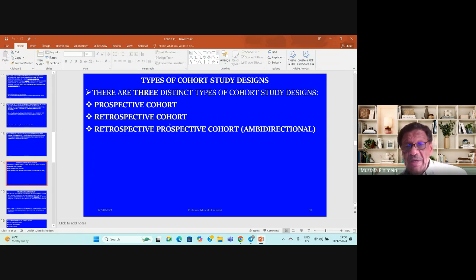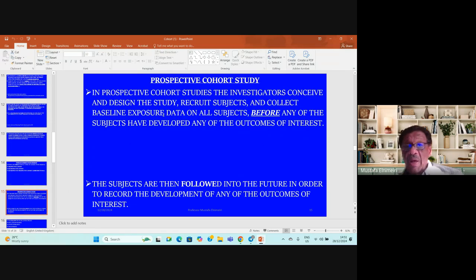We have three categories of cohort study designs: prospective cohort study design, retrospective cohort study design, and retrospective-prospective cohort study design, also called ambidirectional cohort study design. In prospective cohort design, the investigator conceives and designs the study.